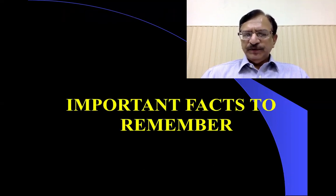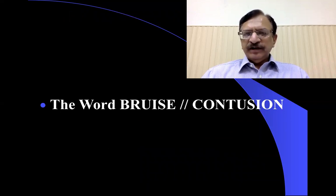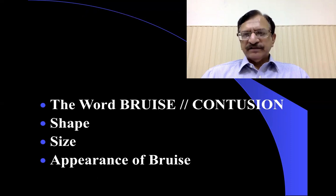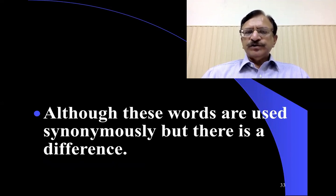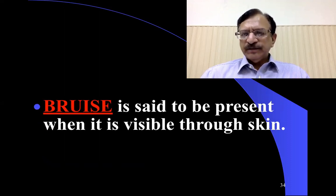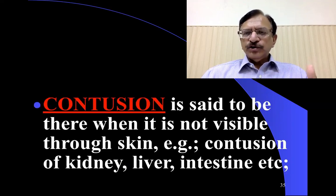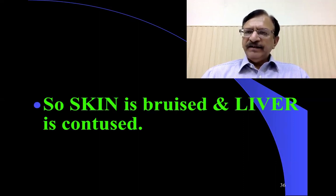A few important facts about bruise: the words bruise and contusion, although used synonymously, have a difference. Bruise is said to be present when it is visible through the skin. Contusion is said to be present when it is not visible through the skin — like contusion of the kidney, contusion of the liver, or intestines. So skin is bruised and liver is contused. This is a contusion of the brain.